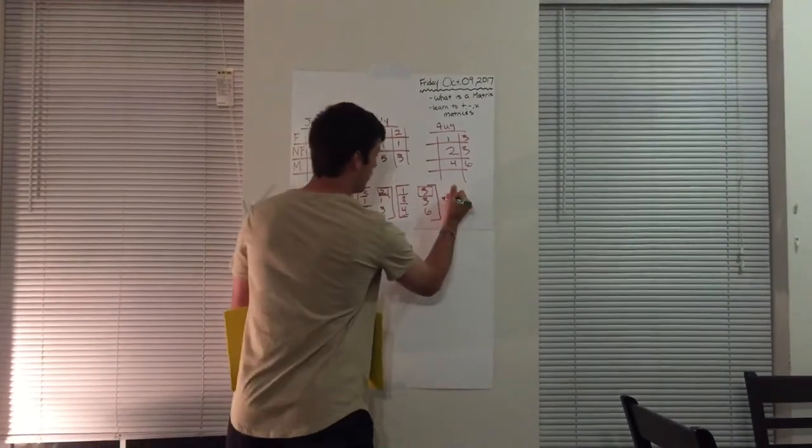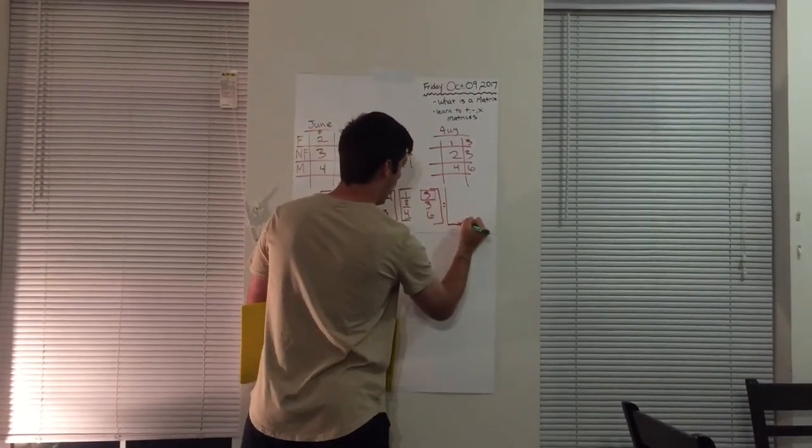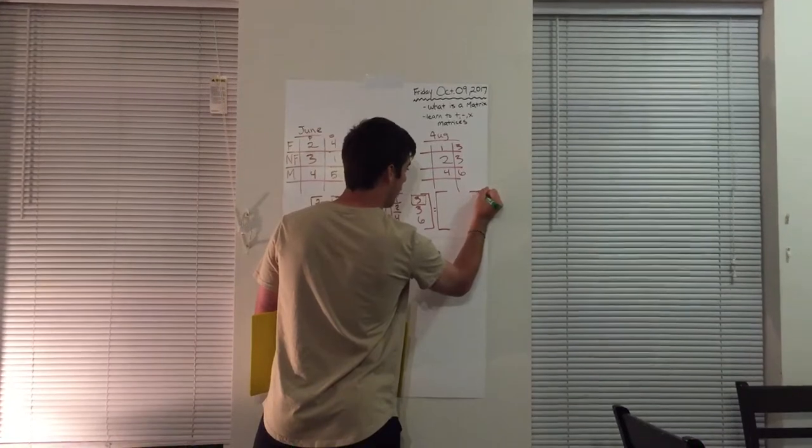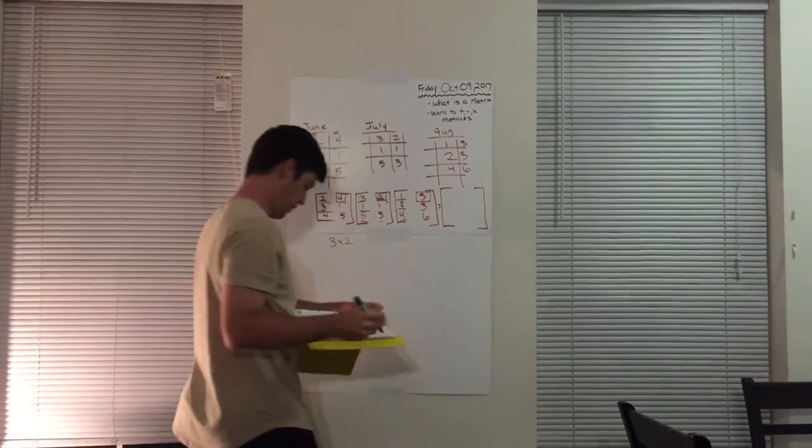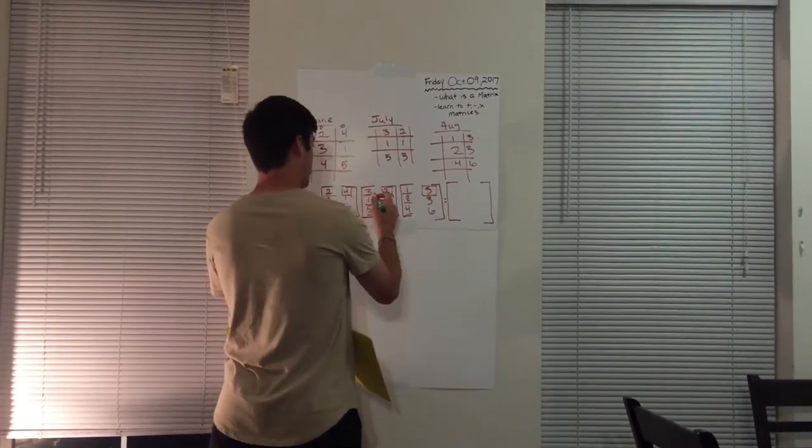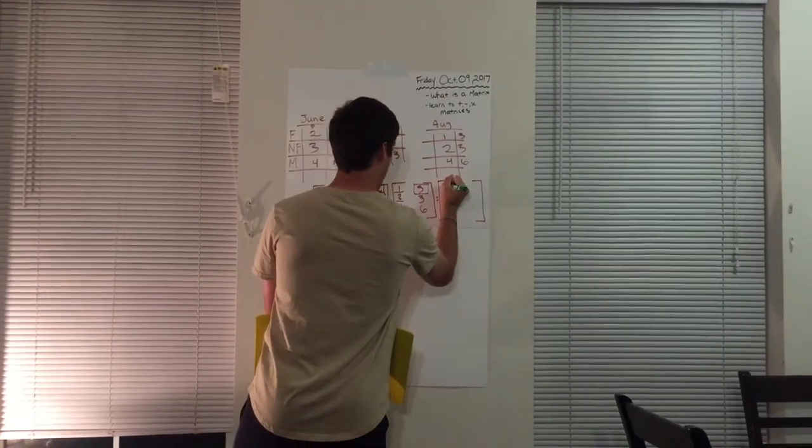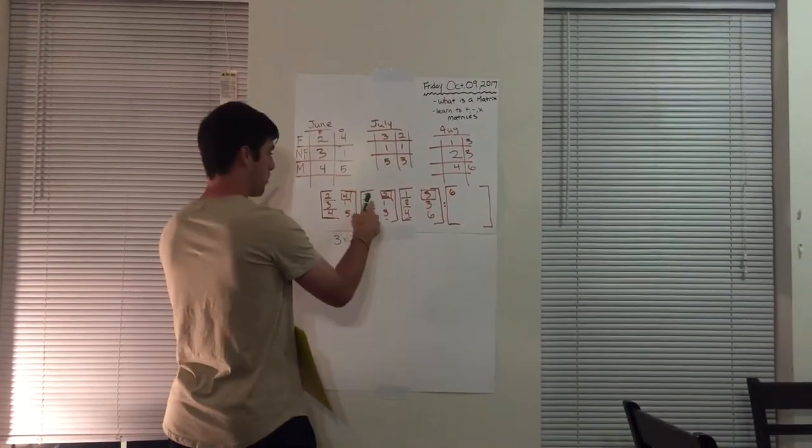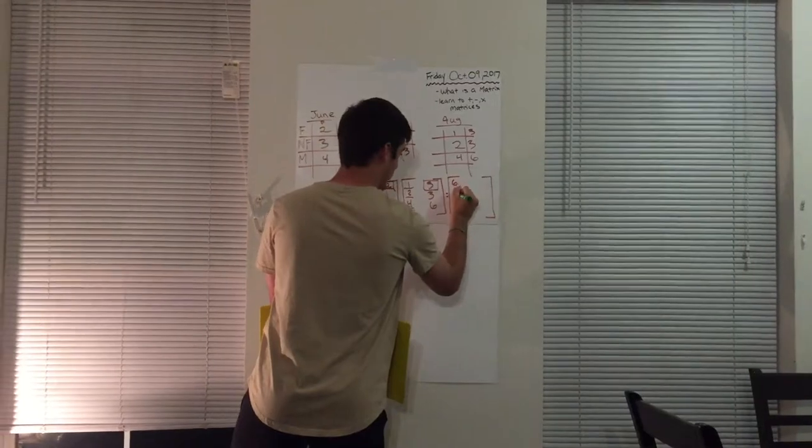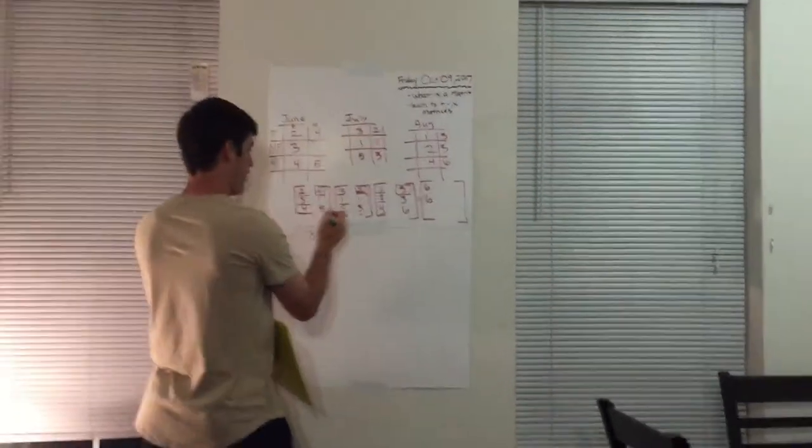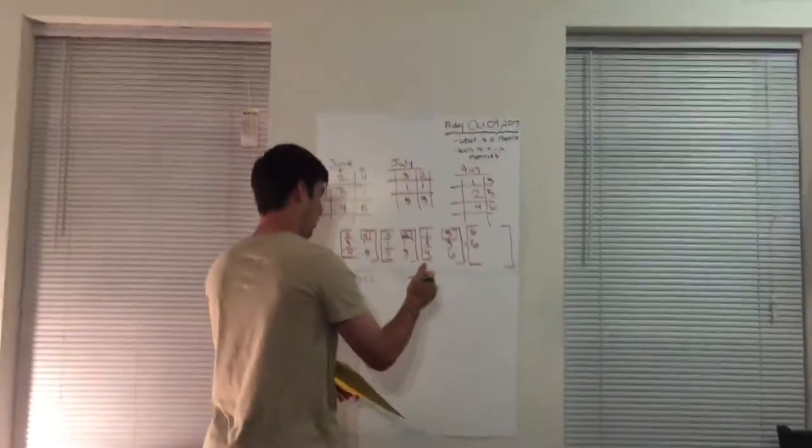So now this would equal one whole bracket of two plus three plus one, which is six, and then three plus one plus two, which is six, and then four plus five plus four, which is 13.